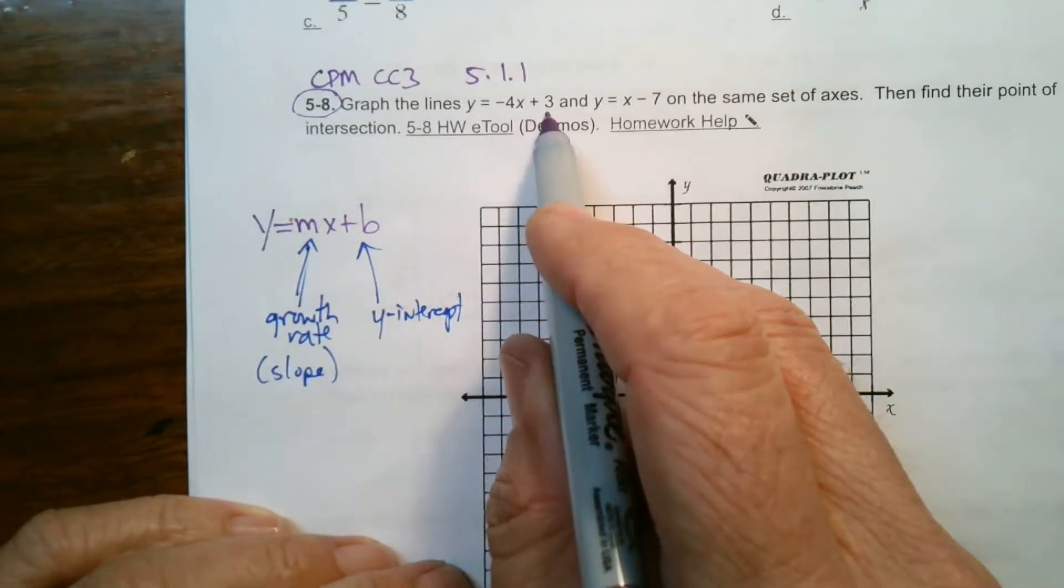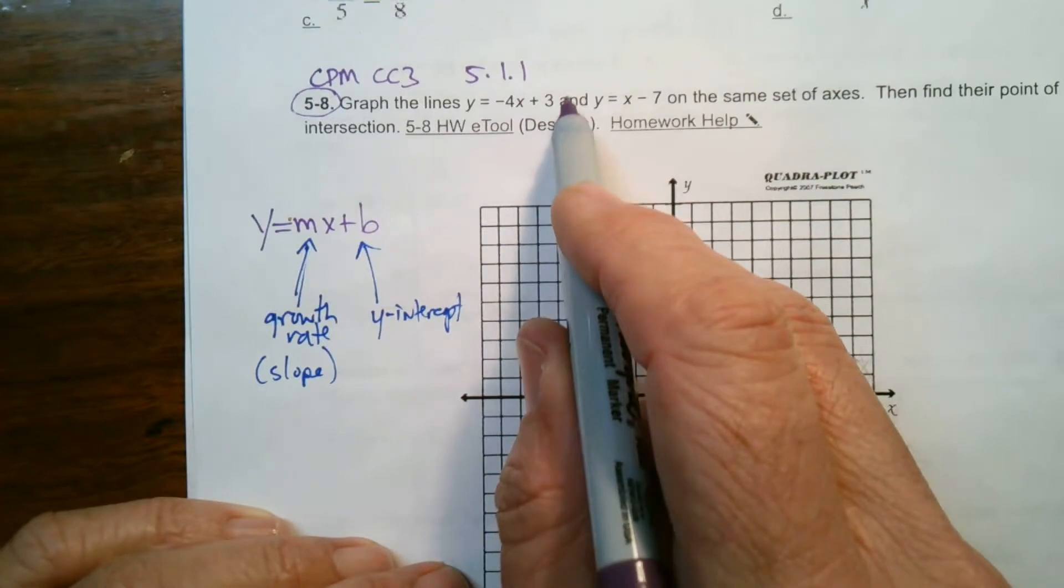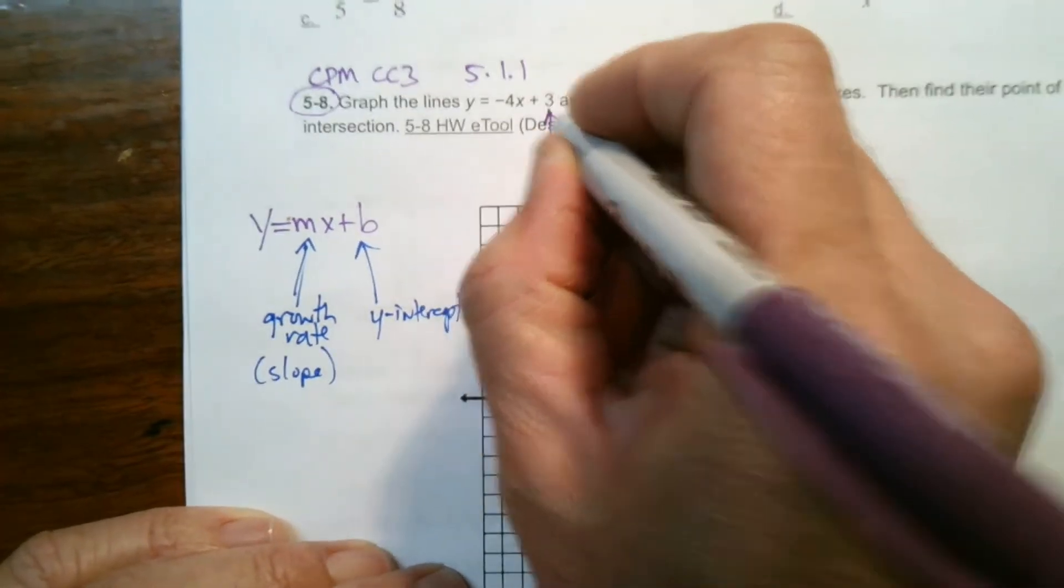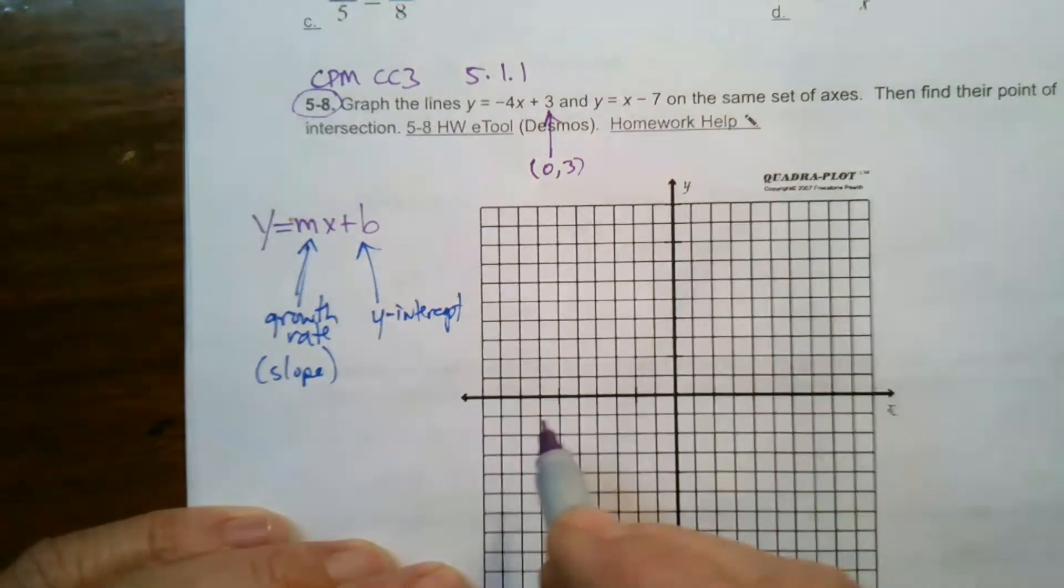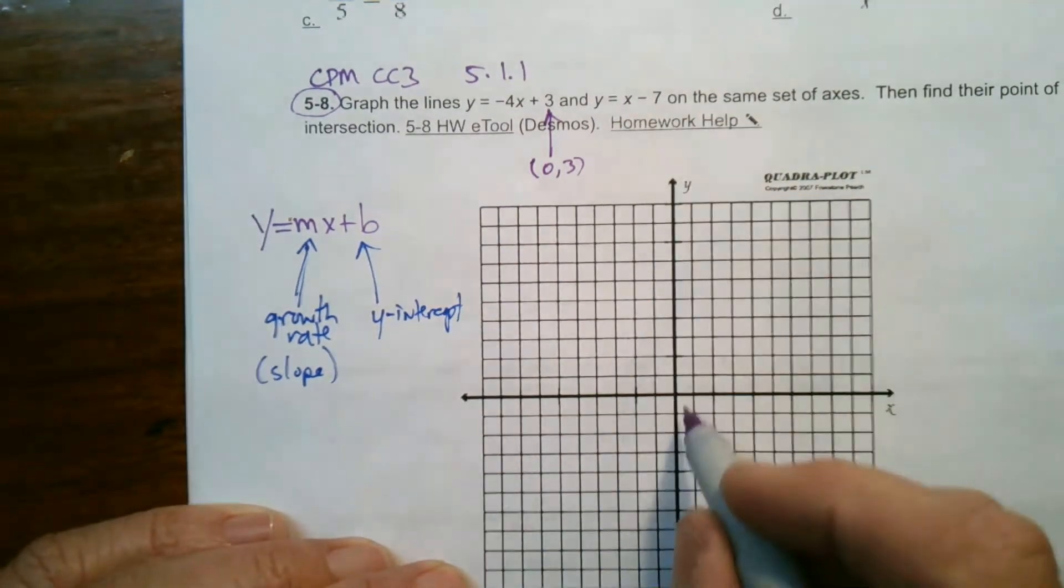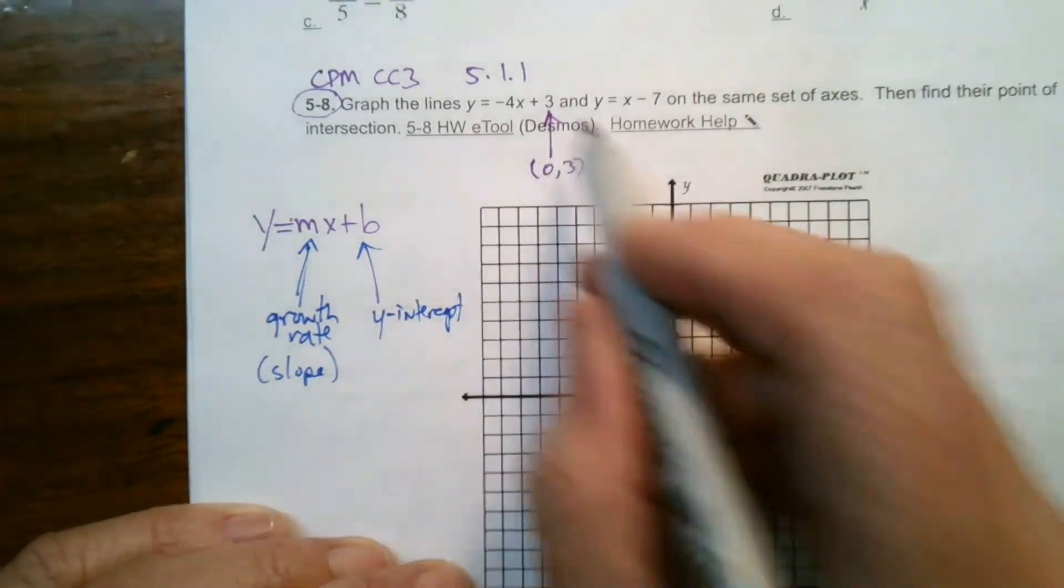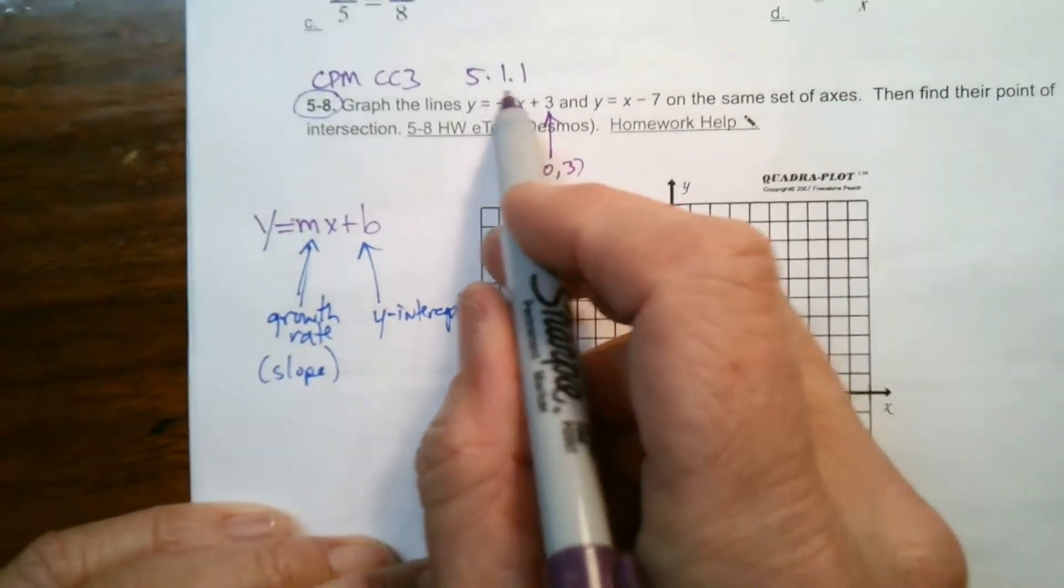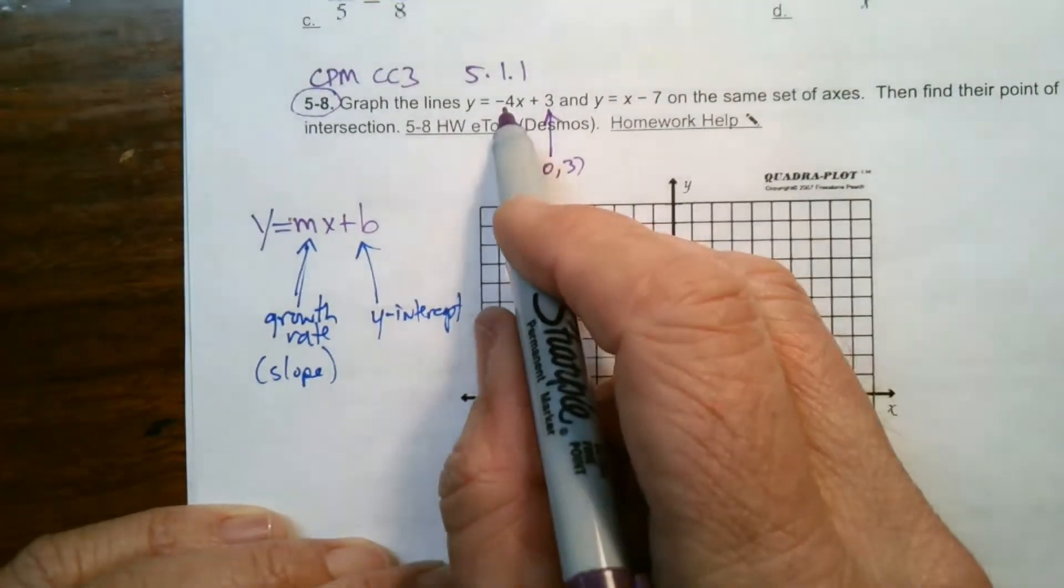So, let's start with the first one. y is equal to negative 4x plus 3. What does that tell me? First of all, I start with the y-intercept. So, that 3 right there tells me it crosses at 0, 3. So, I'm going to find 0, 3. So, 0, 3 would be right here on my graph. That's my initial point. And now I use the slope or my growth to find my next point, negative 4.